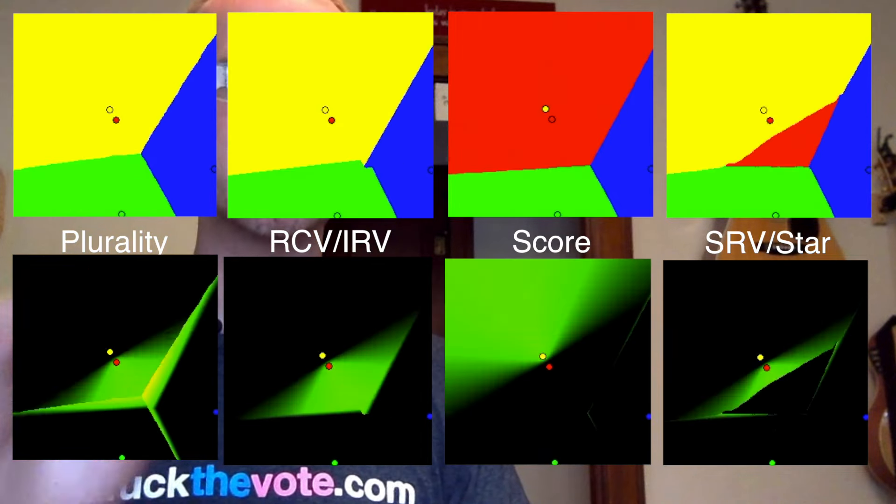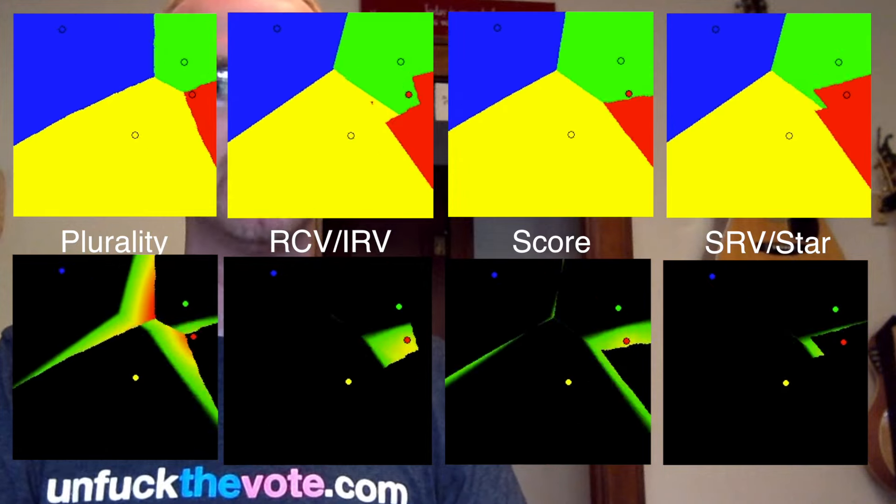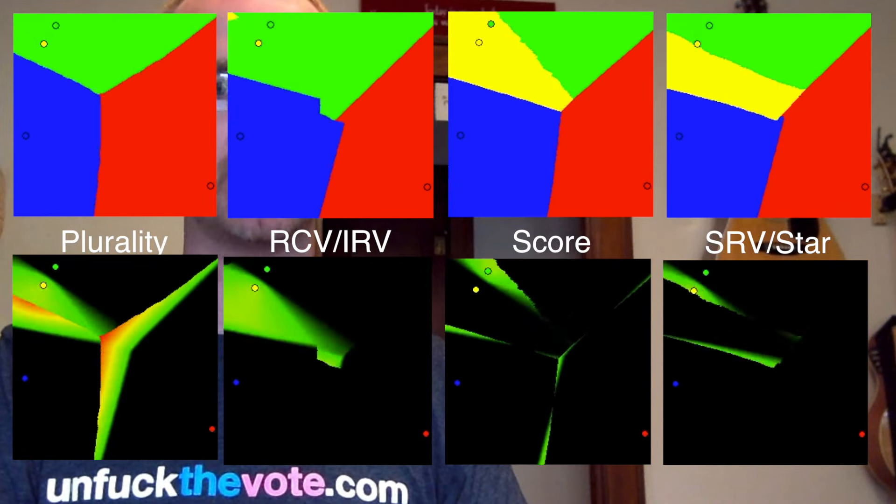And once again, you can see the serious problems present, particularly in plurality and instant runoff, less for score and substantially diminished in star voting.